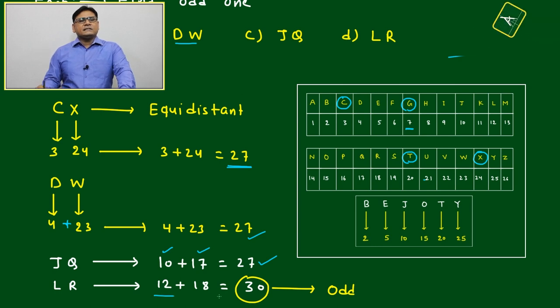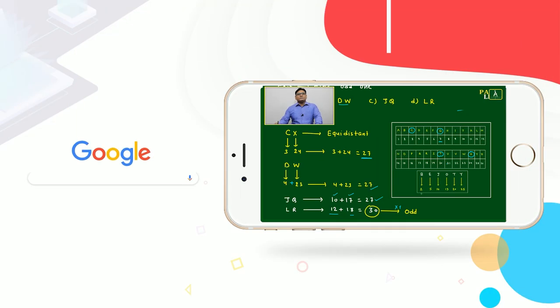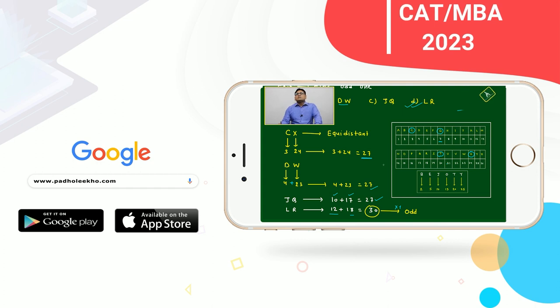L and R: 12 plus 18 is coming 30, no. This is only odd because sum of the relative position of L and R is not coming 27, means they are not equidistant.